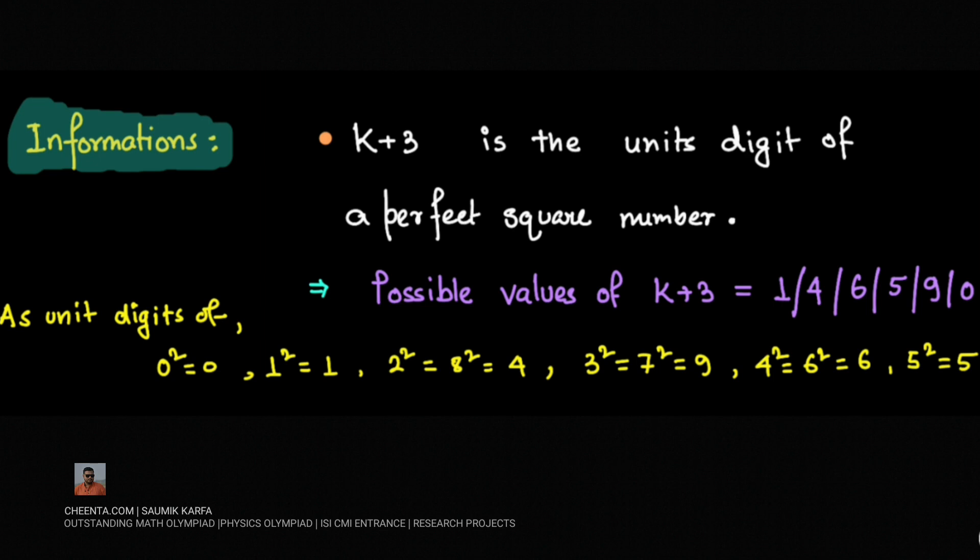Because any number you take should have unit digit 0, 1, 2 up to 9. If I square those numbers, the unit digit is: 0² is 0, 1² is 1, 2² and 8² both are 4. Similarly, for 3² and 7², the unit digit is 9. For 4² and 6², the unit digit is 6, and for 5², the unit digit is 5.